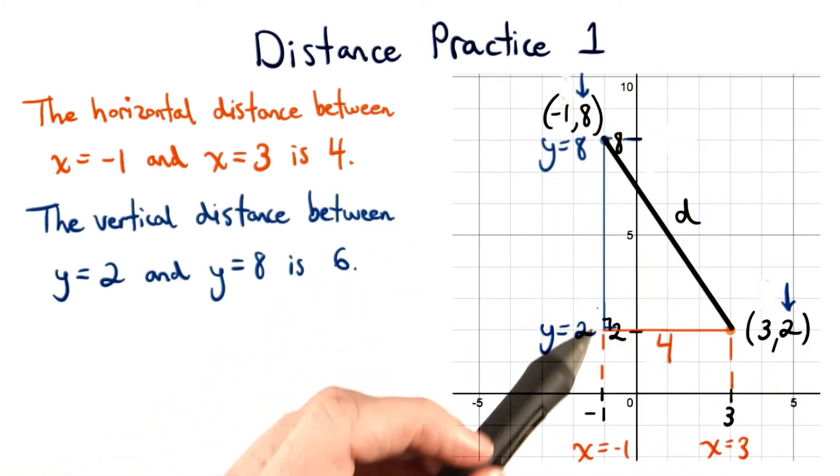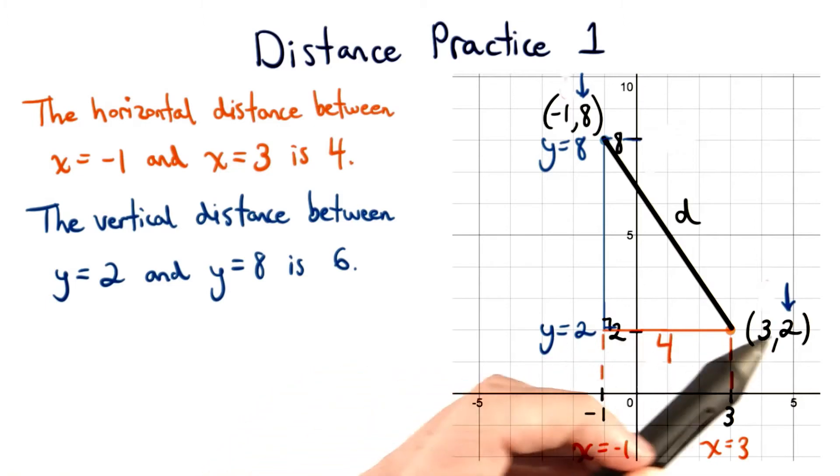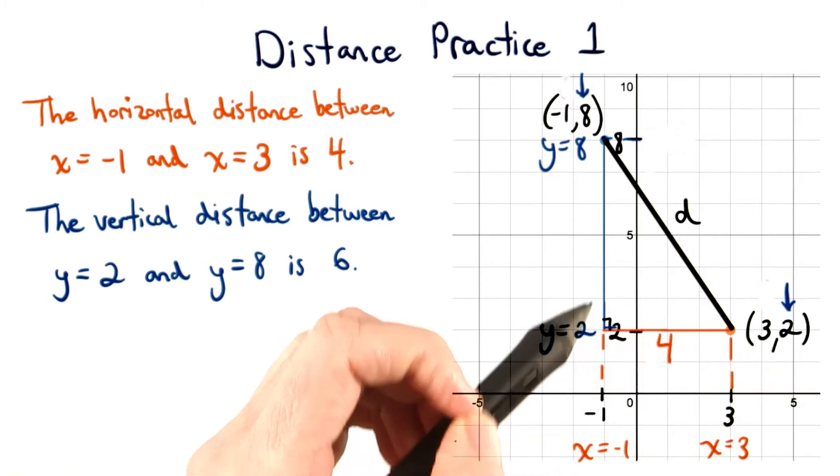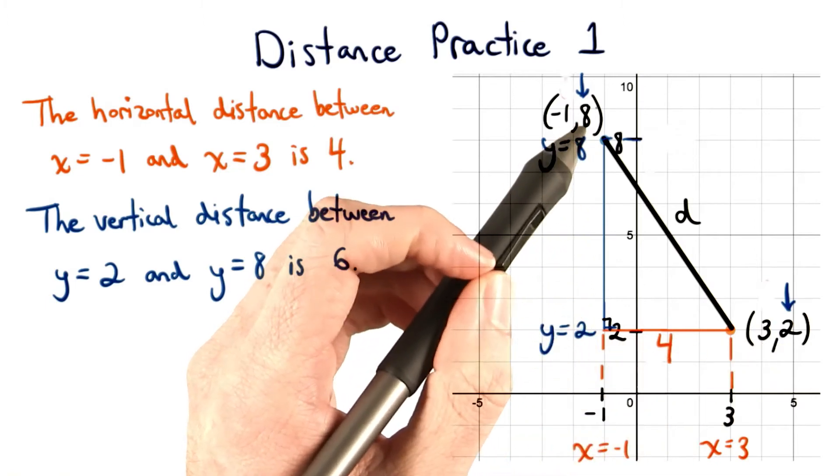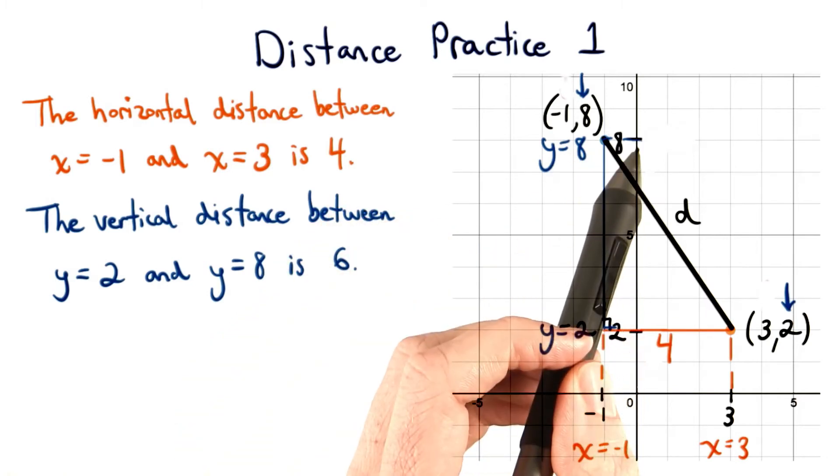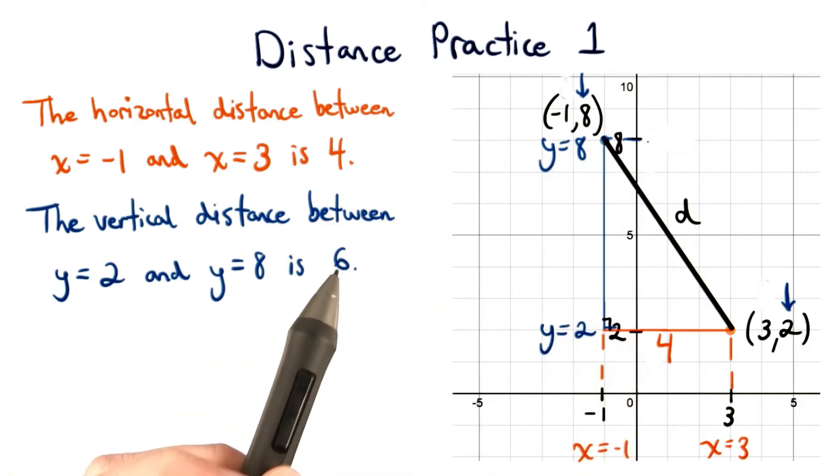Now we need to find the vertical distance. We start at y equals 2, which is here, and then we go all the way up to y equals 8, which is here. So this vertical distance on the y axis is a distance of 6 units.